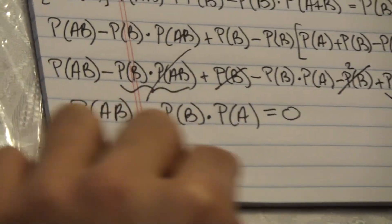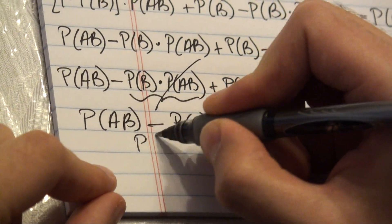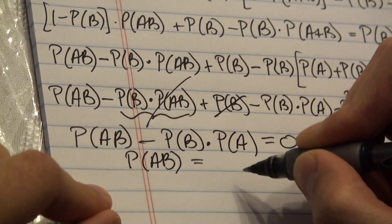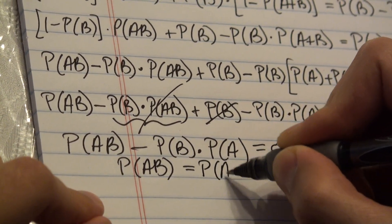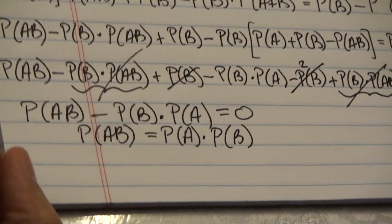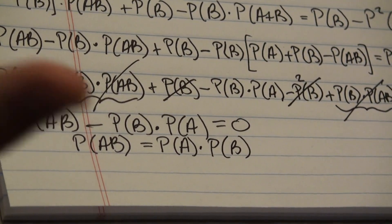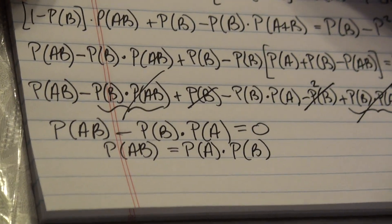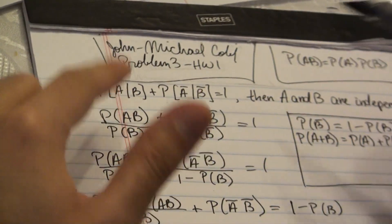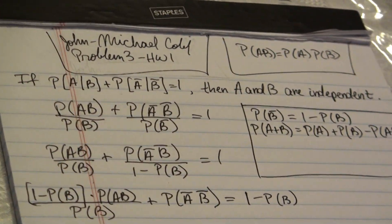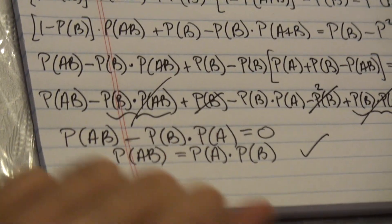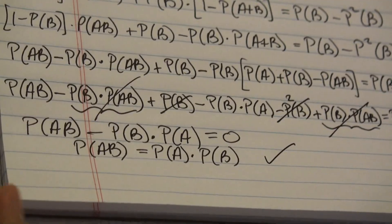What are we left with? We're left with probability of AB minus probability of B times probability of A equals zero. So moving this to the other side: probability of AB equals probability of A times probability of B. Therefore, starting from the initial condition, this shows that A and B will be independent. I've just shown that A and B are independent if this condition is true.